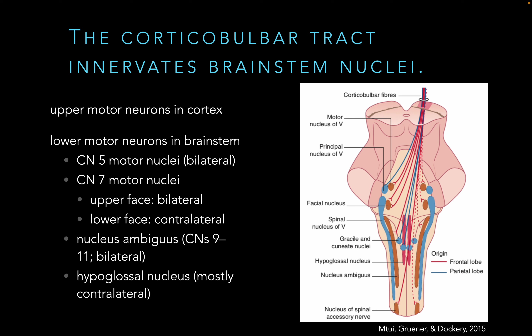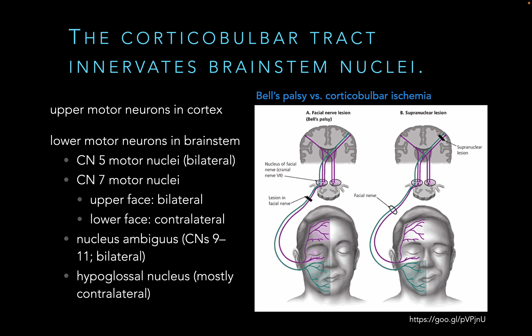Two exceptions: the lower face and the tongue are contralateral. Everything else we should consider as bilateral. For example, innervation of the trigeminal motor nucleus for chewing is bilateral — you chew with both sides of your jaw. The upper face is generally bilateral; we tend to be able to raise both eyebrows. On the other hand, we can control the two sides of our mouth independently. You can give a half smile on one side, and that's because of the contralateral innervation of the lower face.